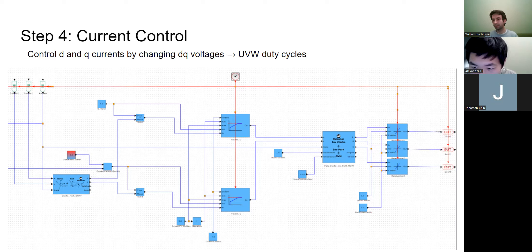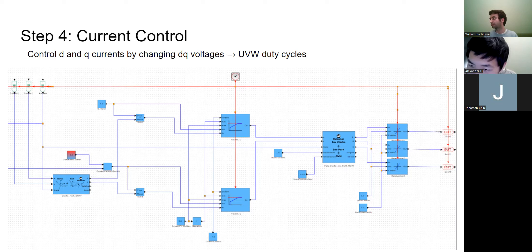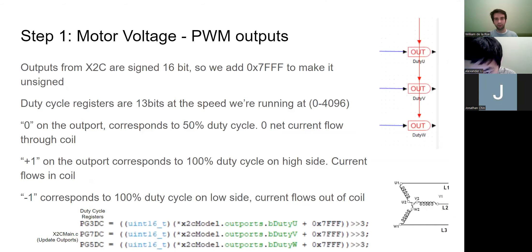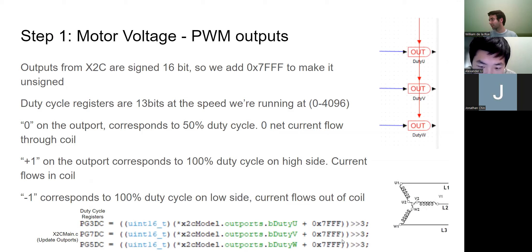There are rate limiters that prevent going from zero to 100% duty cycle in a single time step - we added these because of brownout issues. The three duty cycle values from the SVM block get scaled and bit-shifted to fit properly into the registers.